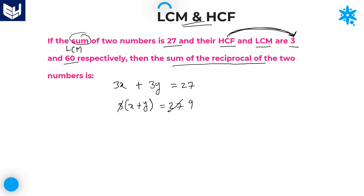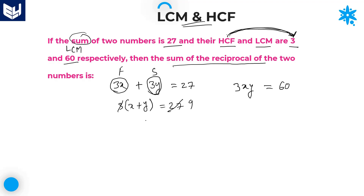One more condition: the LCM of those two numbers is 60. The LCM of 3x and 3y is 3xy. So 3xy = 60.